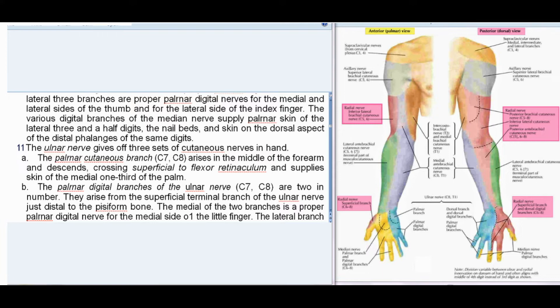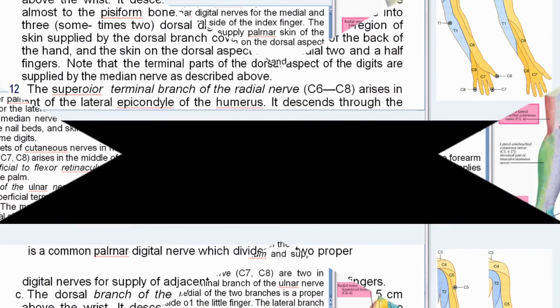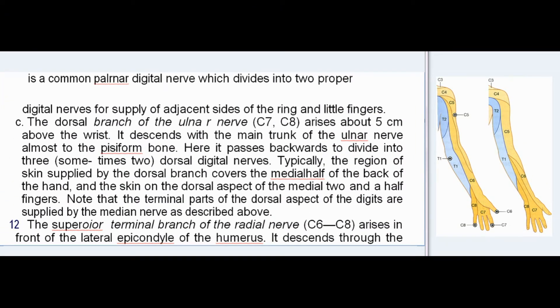The medial branch is a proper palmar digital nerve for the medial side of the little finger; the lateral branch is a common palmar digital nerve dividing into two proper digital nerves for adjacent sides of the ring and little fingers. The dorsal branch of the ulnar nerve (C7, C8) arises about 5 cm above the wrist and divides into three (sometimes two) dorsal digital nerves, typically supplying the medial half of the back of the hand and dorsal skin of the medial two and a half fingers. The terminal parts of the dorsal digits are supplied by the median nerve.